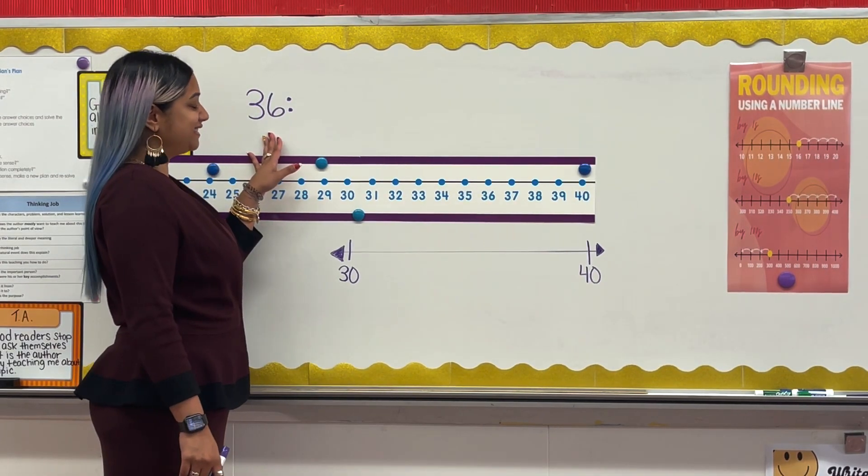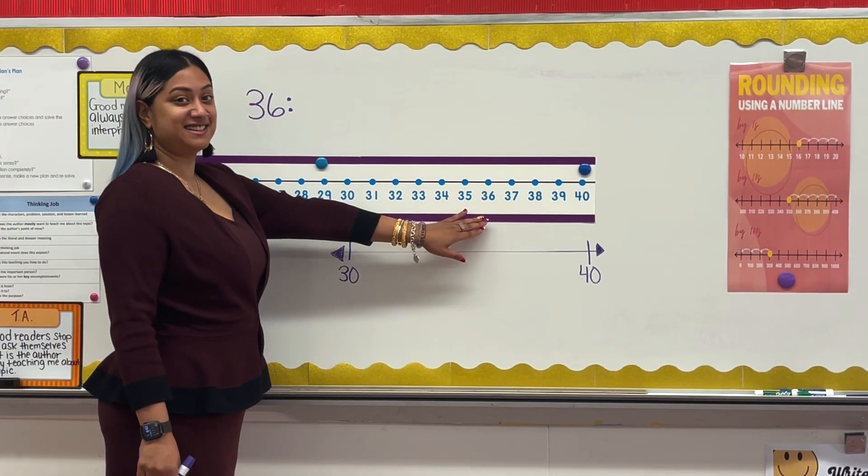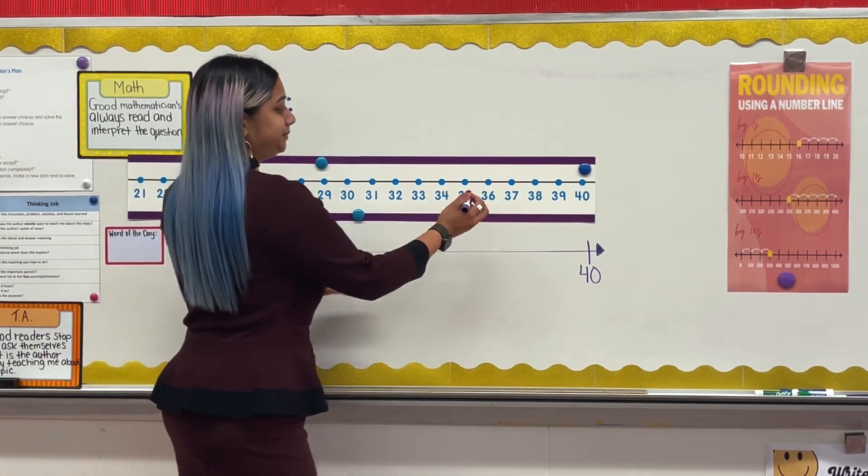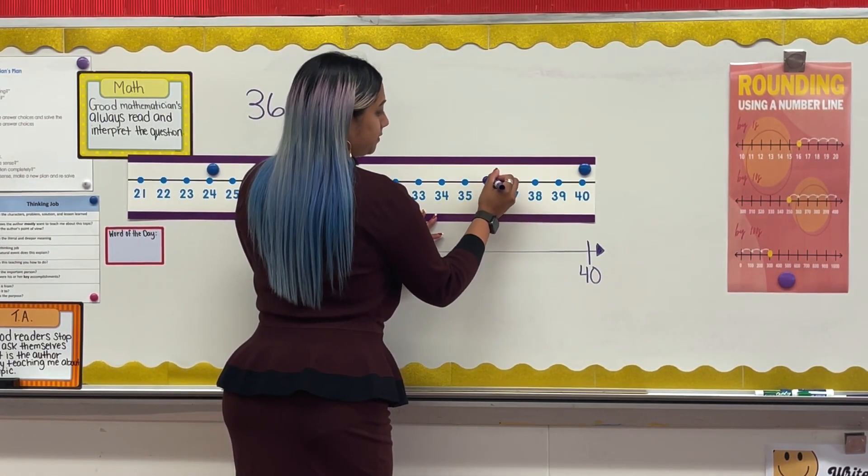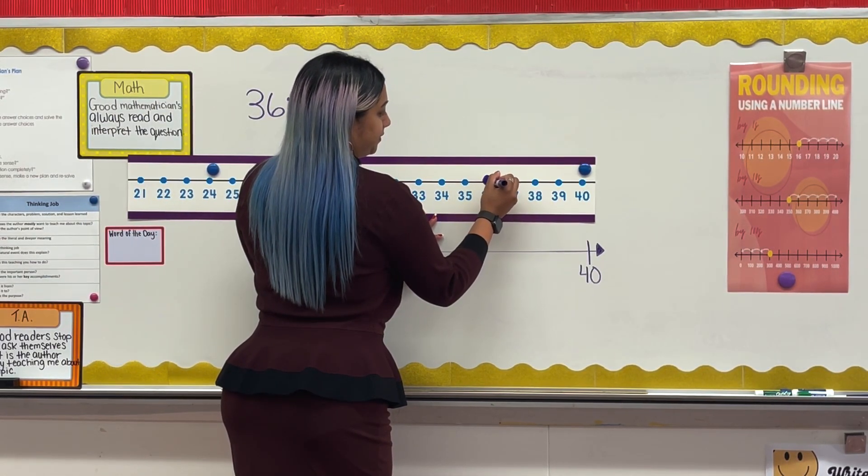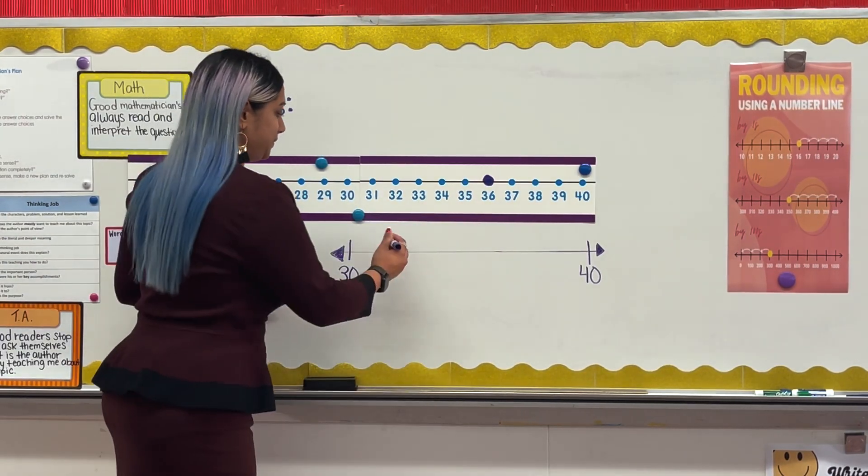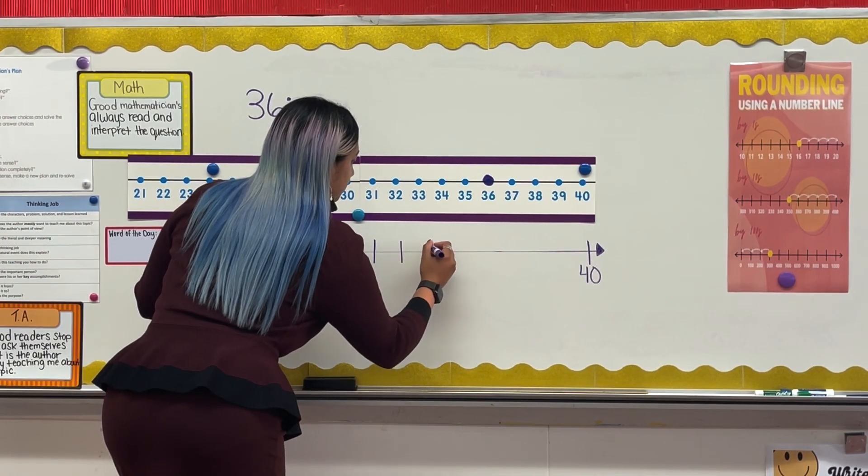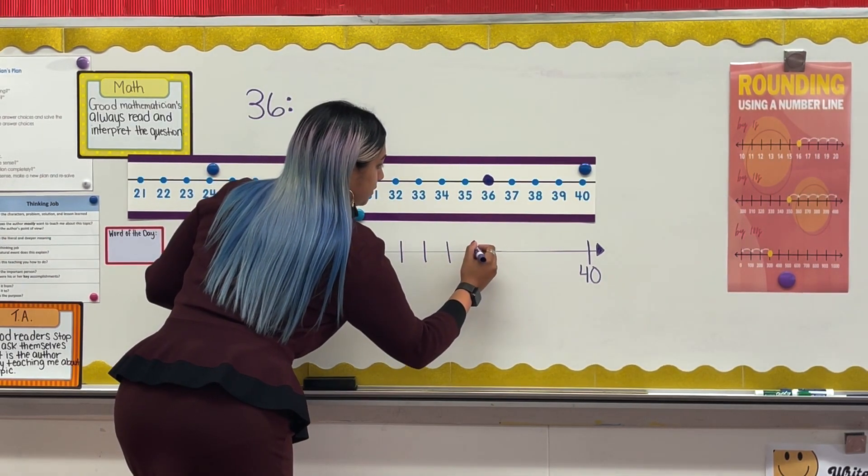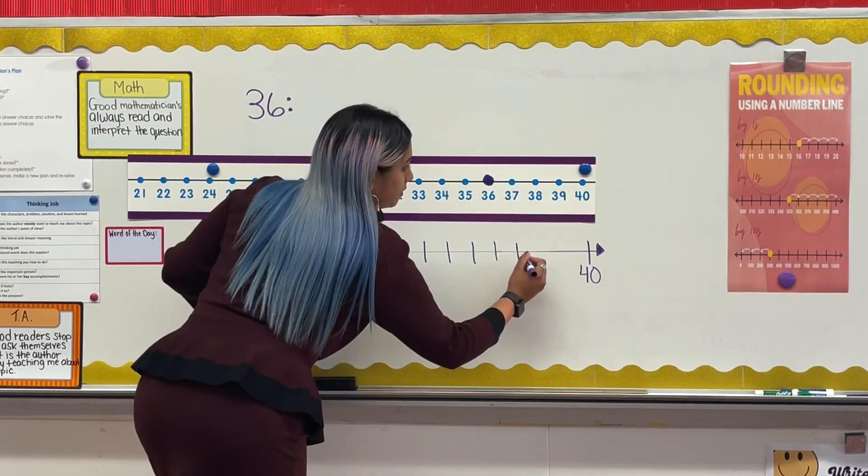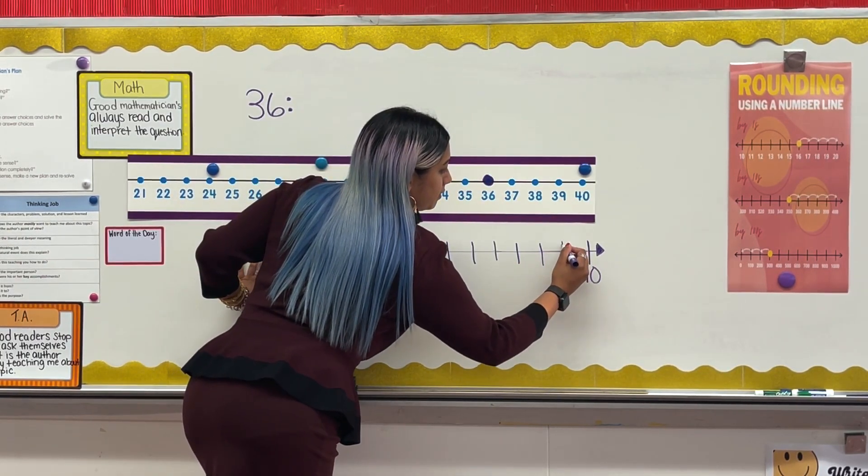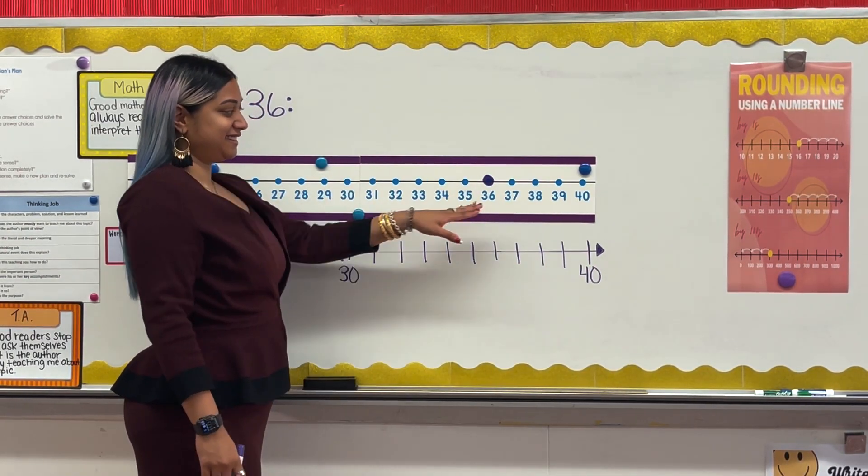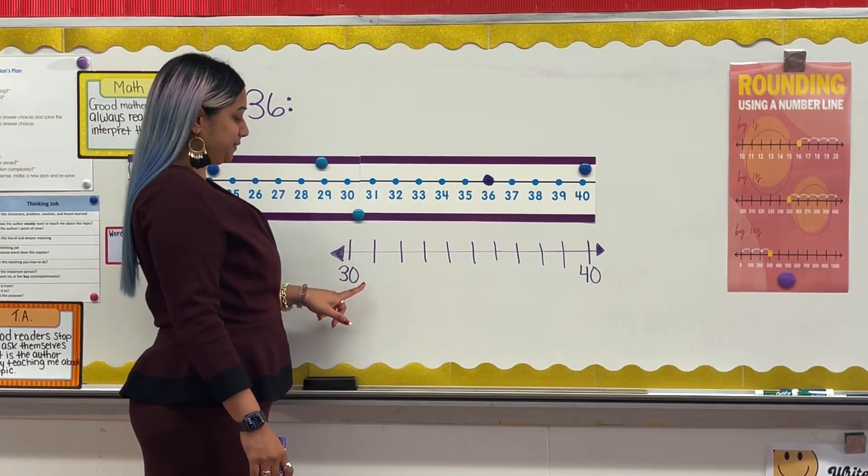Now that we've identified these two 10s, we need to figure out which 10 the number is closest to by plotting the number on the number line. First, I want to draw and label my tick marks in between 30 and 40. Because I have a pre-made number line above my drawn number line, I already know where my numbers go.